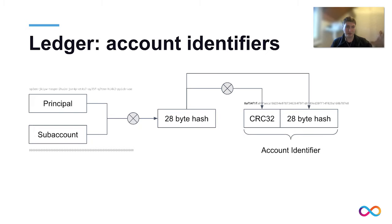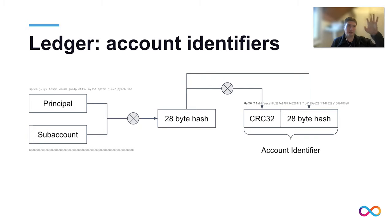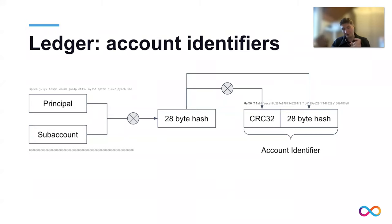There is a notion of principal, which is an identifier of a user or a canister on the internet computer. Typically it looks like a base-64 encoded string with dashes in the middle — if you type 'dfx identity get-principal' you get something like that. For users, this is typically a hash of their public key. In the ledger, a principal is the entity that holds the funds. There is also a notion of subaccount. The ledger allows the same principal to have a lot of subaccounts — up to 2^64 or actually more. A subaccount is an arbitrary 32-byte string, so it's quite a substantial amount of subaccounts.